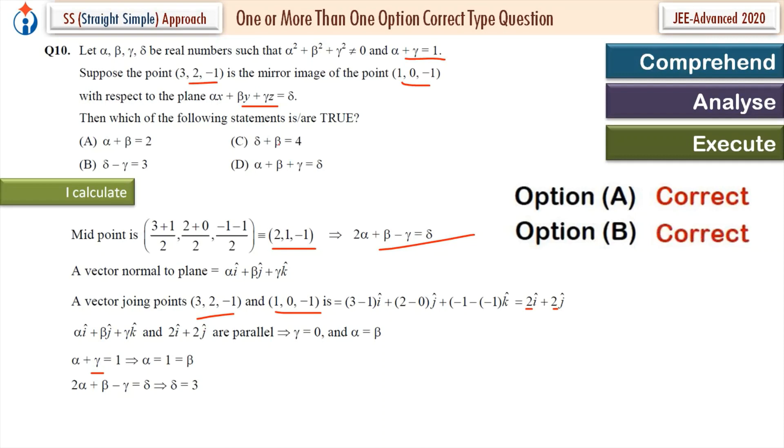Option C: δ + β, 3 + 1 = 4. Correct. And α + β + γ = δ, that's 1 + 1 + 0 = 3. No. Option D incorrect. Options A, B, C - basic results.